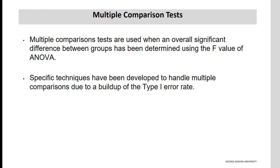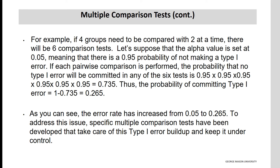Specific techniques have been developed to handle multiple comparisons due to a buildup of the Type 1 error rate. For example, if four groups need to be compared two at a time, there will be six comparison tests. If alpha is set at 0.05, there is a 0.95 probability of not making a Type 1 error per test. The probability that no Type 1 error is committed across all six tests is 0.95 to the sixth power, which equals 0.735. Thus, the probability of committing a Type 1 error is 1 minus 0.735, equal to 0.265 — meaning the error rate has increased from 0.05 to 0.265. Specific multiple comparison tests have been developed to keep this Type 1 error buildup under control.